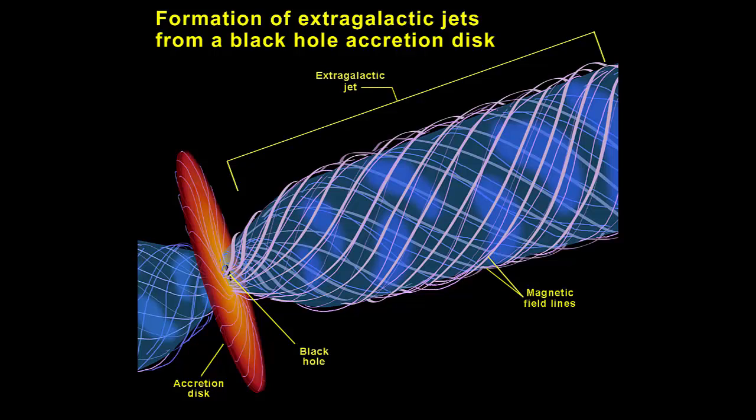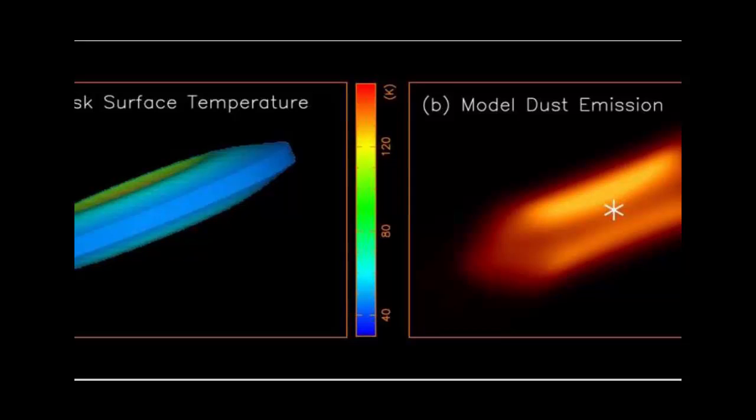The protostellar system Li's team investigated is Herbig-Haro object HH212, which lies about 1,300 light-years away from Earth and contains a central protostar that's about 40,000 years old, compared to Earth's 4.5 billion-year-old sun.